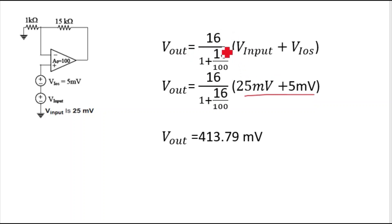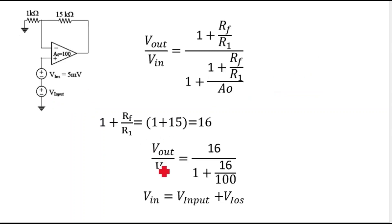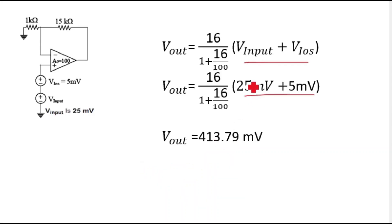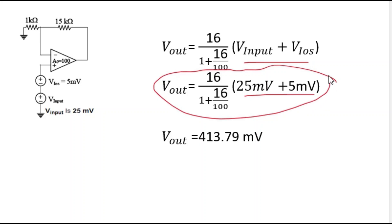So V out equals 16 divided by (1 plus 16 by 100) multiplied by (25 millivolt plus 5 millivolt). Solving this gives V out equals 413.79 millivolt.